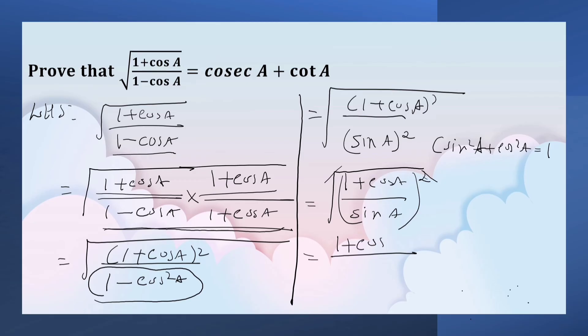1 plus cos a by sin a. You observe that this is equal to 1 upon sin a which is cosecant a plus cos a by sin a which is cot a which is equal to RHS.